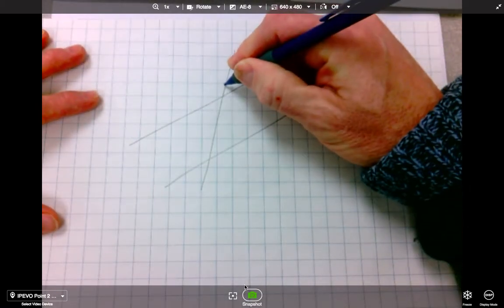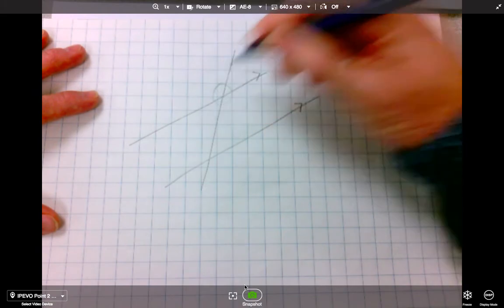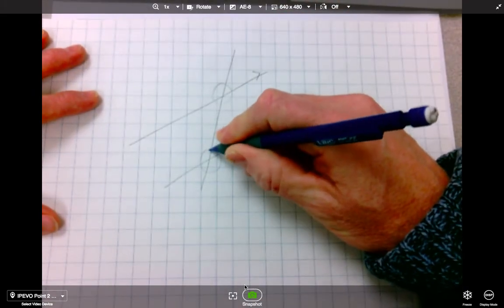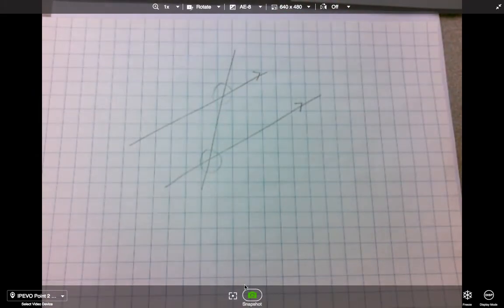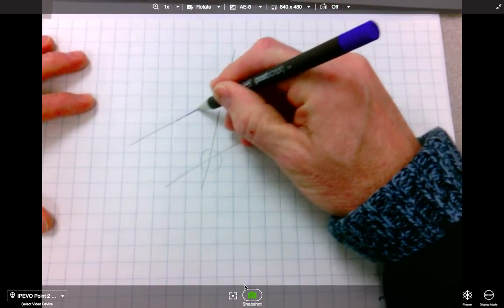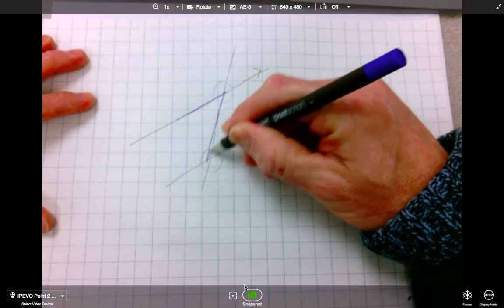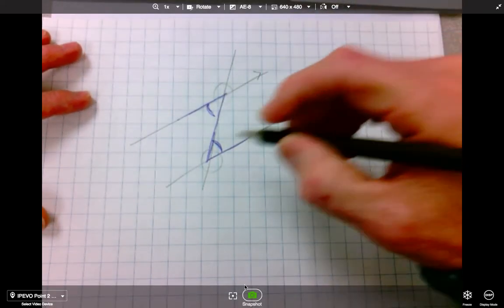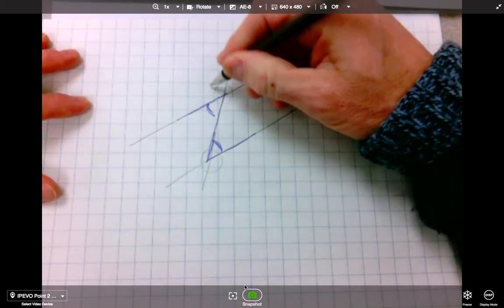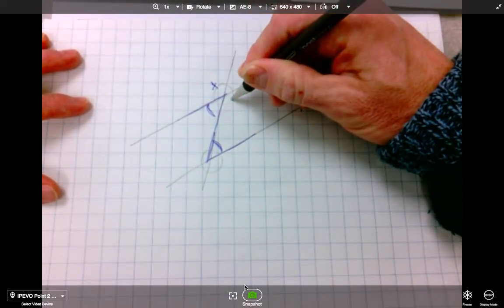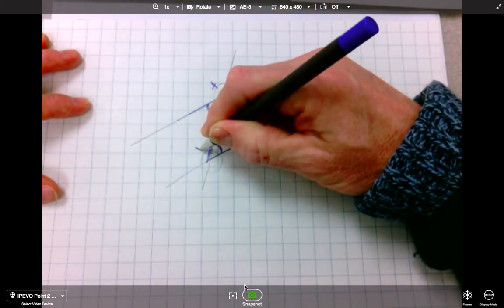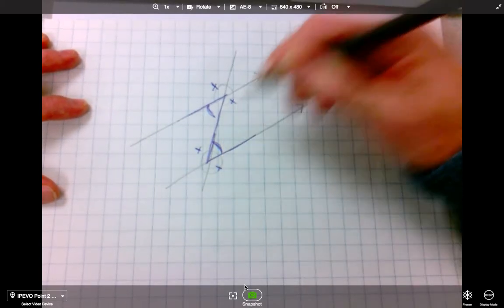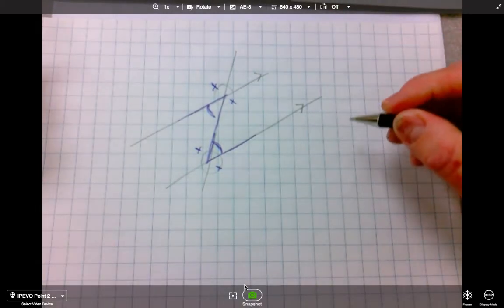We know that these angles here are the same as these angles here. We also know about the alternate angles, that these are the same. We know about opposite angles. We know that this angle is the same as this angle. We know that this angle is the same as this angle. There's a lot of fundamentals we actually know.